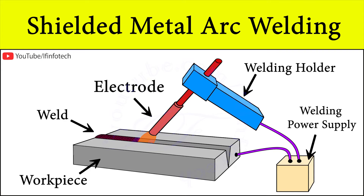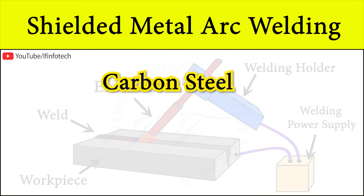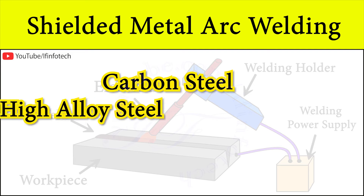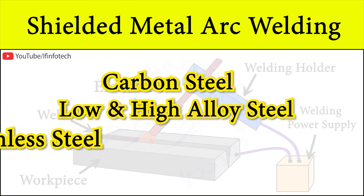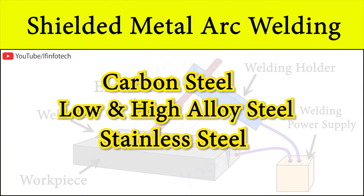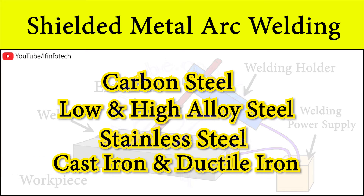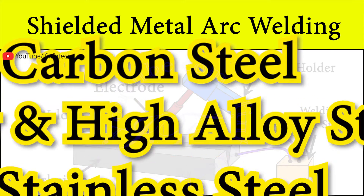The shielded metal arc welding process is used to weld carbon steel, low and high alloy steel, stainless steel, cast iron and ductile iron.